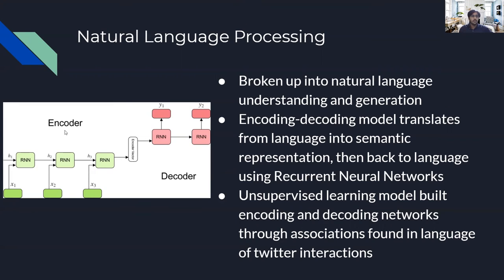In the image on the left, we can see the encoder and the decoder. In the encoder, we have inputs x1, x2, x3 as words and language that are processed. These are encoded using RNNs — recurrent neural networks — and then decoded by more RNNs. The output is generated words or phrases represented as y1 and y2.